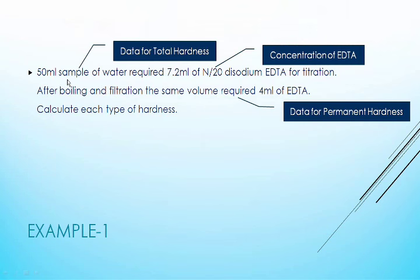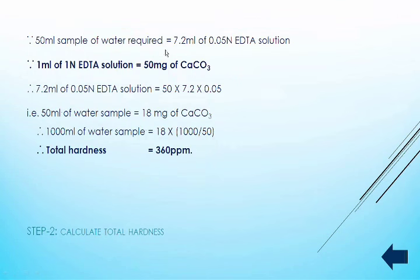Now by using this data from the first line, let's calculate total hardness. 50 ml of the water sample required 7.2 ml of 0.05 normal EDTA solution. We know that 1 ml of 1 normal EDTA solution corresponds to the equivalent weight of calcium carbonate, that is 50 milligrams of calcium carbonate, because we calculate hardness with respect to calcium carbonate salt.